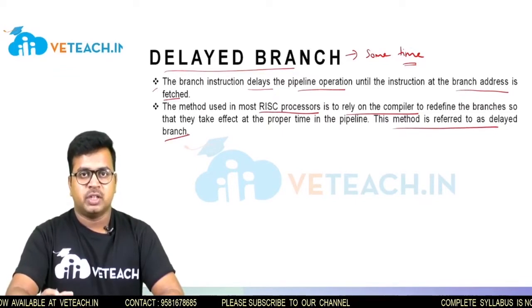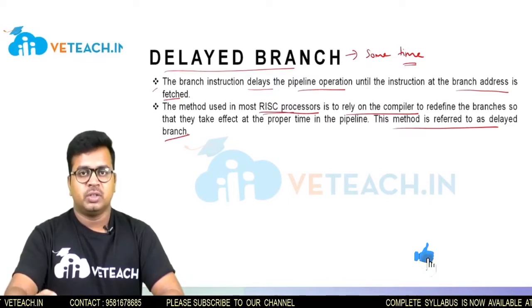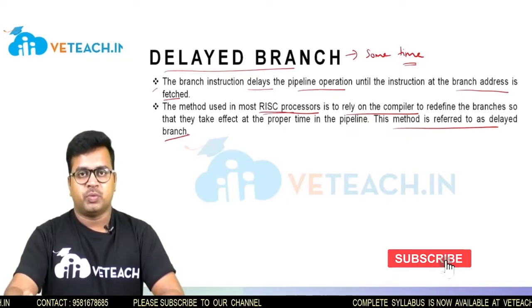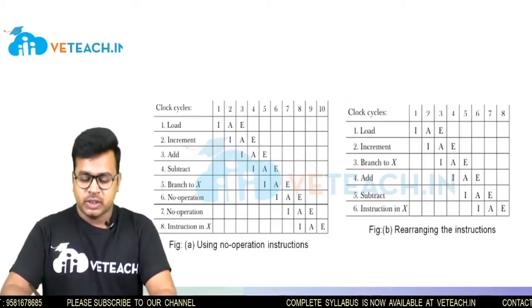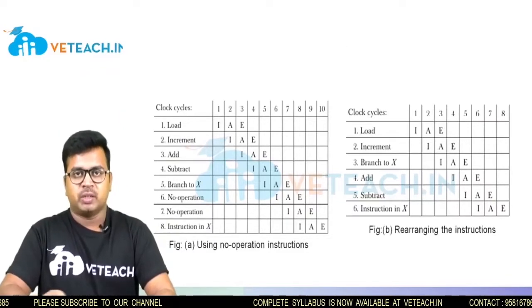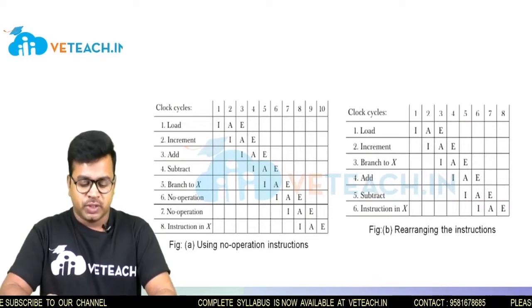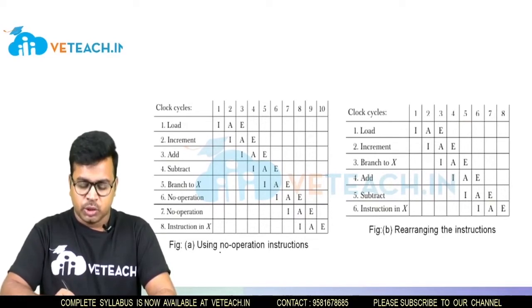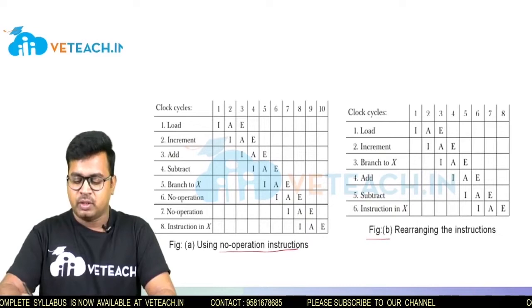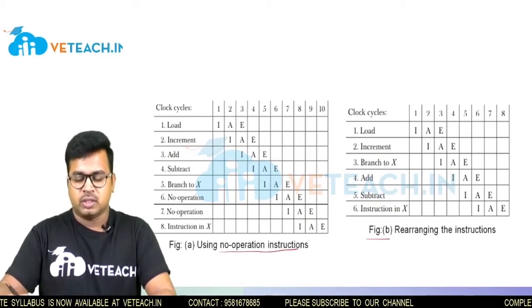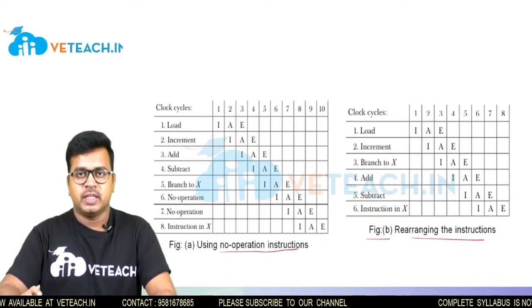In the next slide, I will explain how RISC processors rearrange those delays. There are two separate tables shown here. The first table uses no-operation (NOP) insertions, while the second table shows RISC processors after rearranging instructions to reduce branch delays.